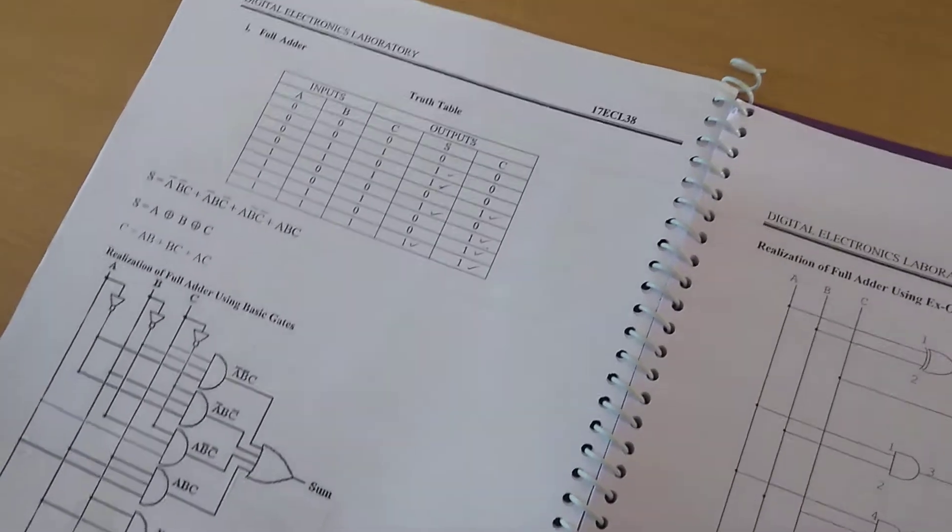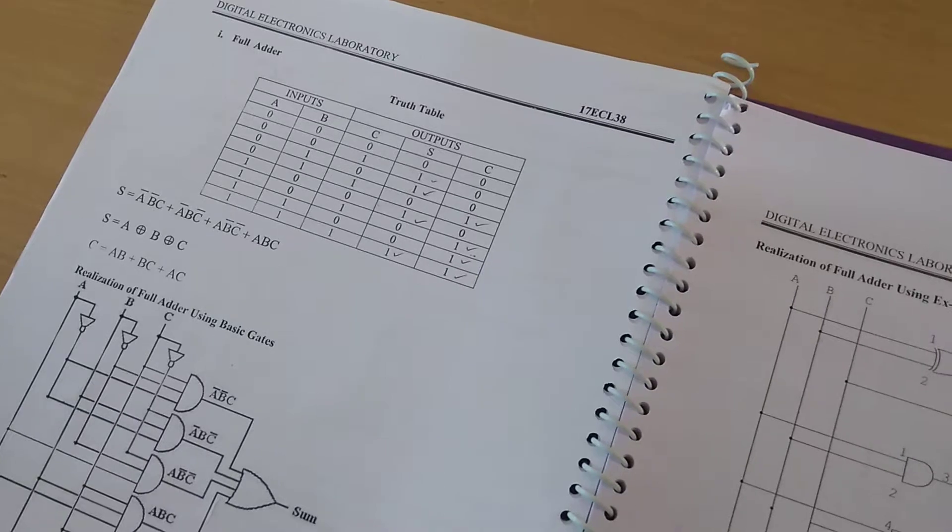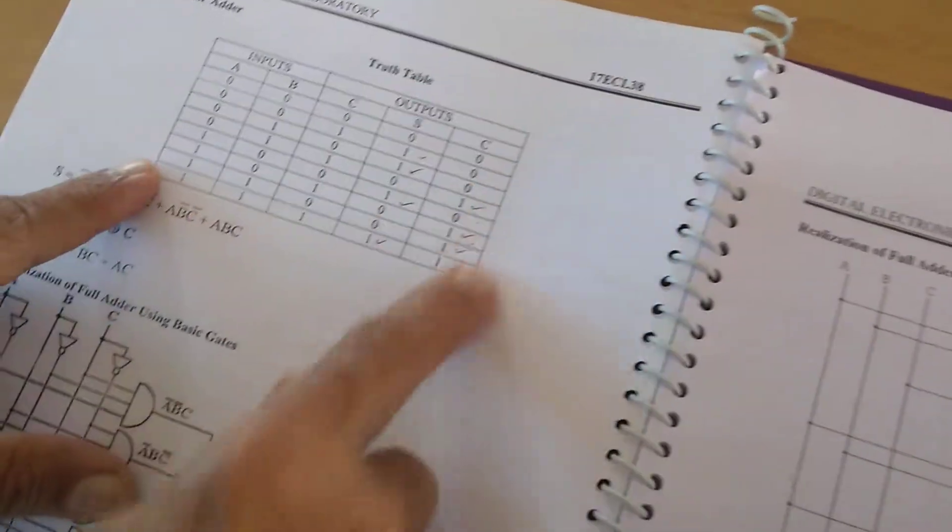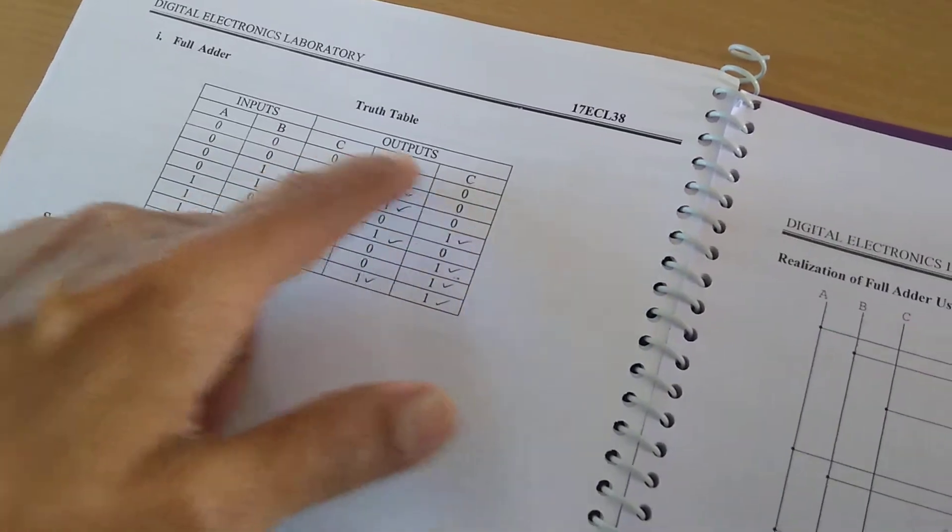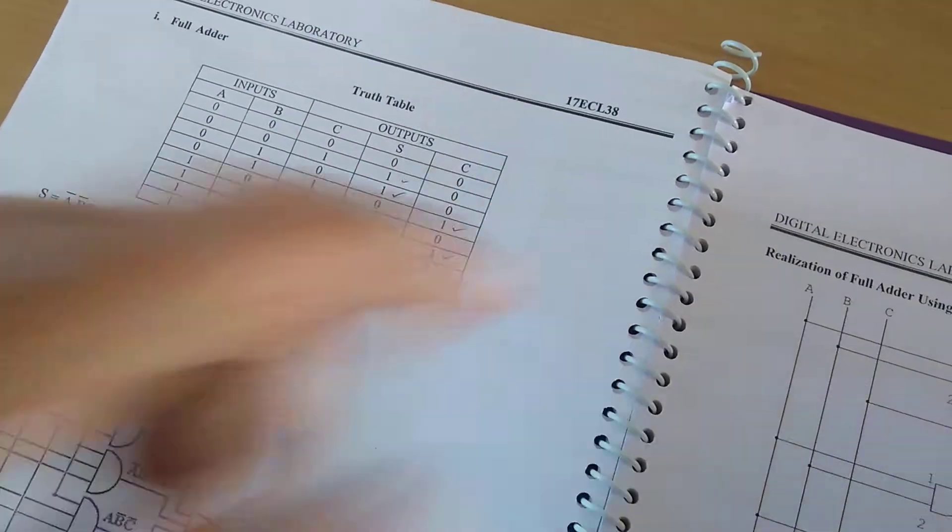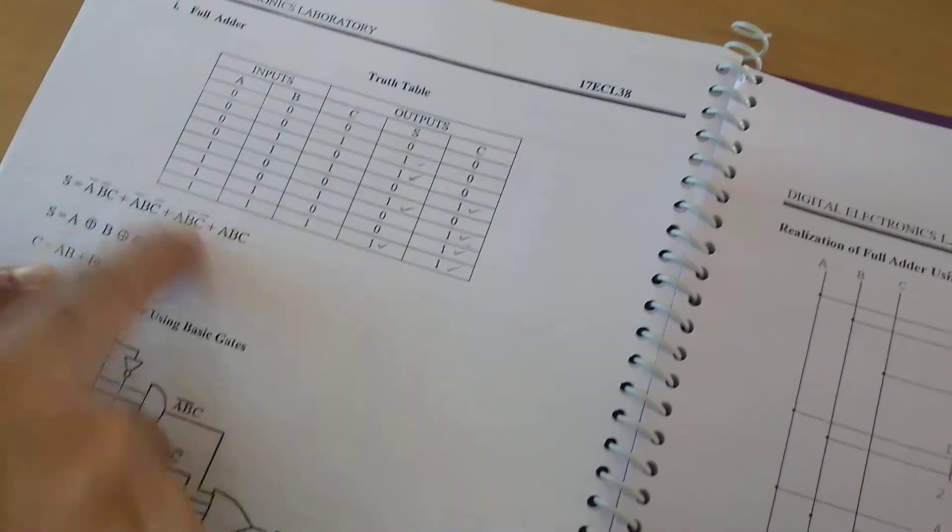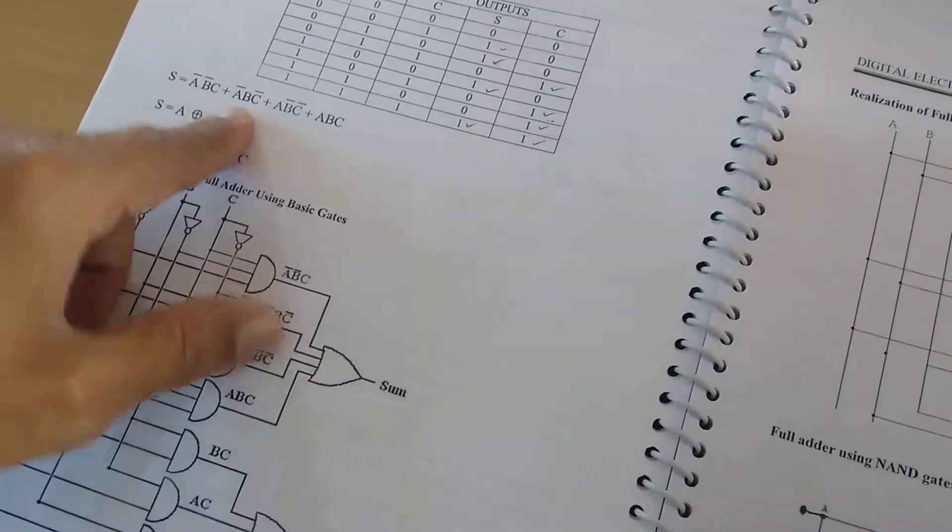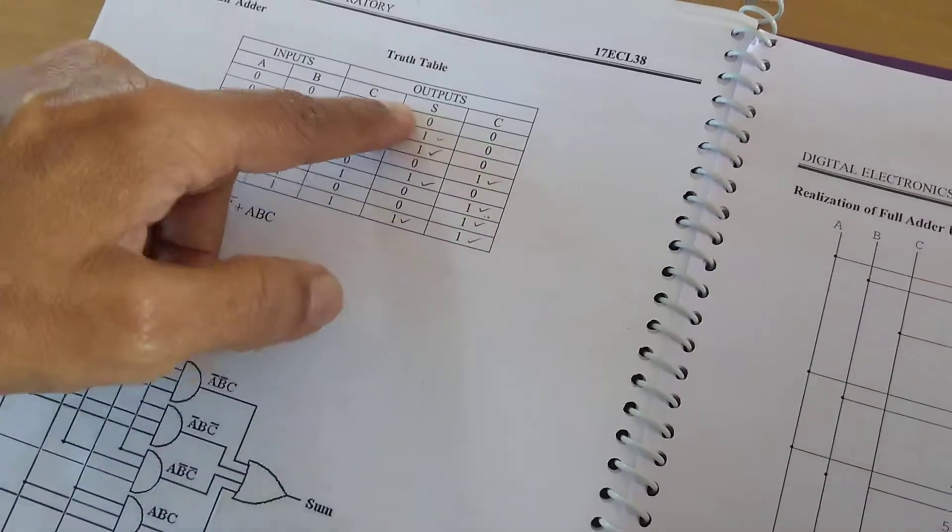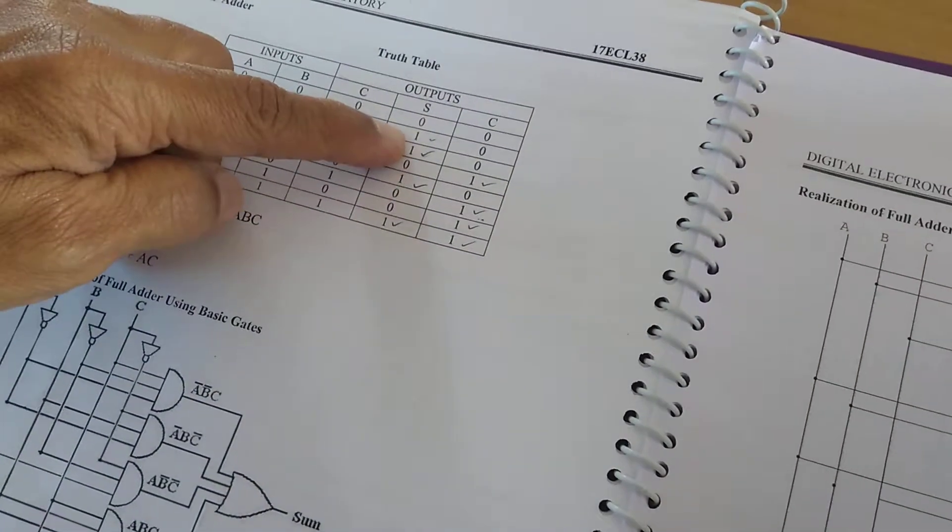Now I am going to explain full adder using basic logic gates. This is the truth table where we have three inputs A, B, C and the outputs sum as well as carry. This truth table is written first. If you see here for the sum, there are four ones.